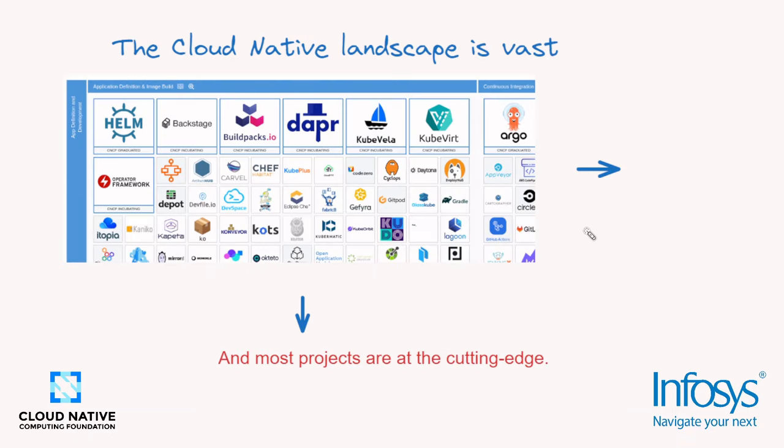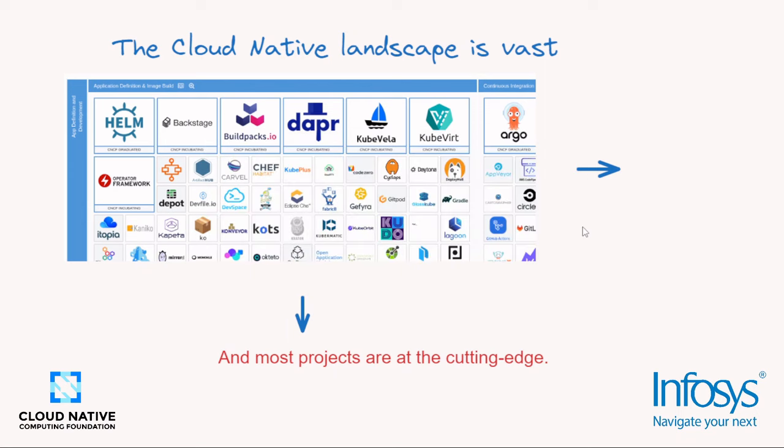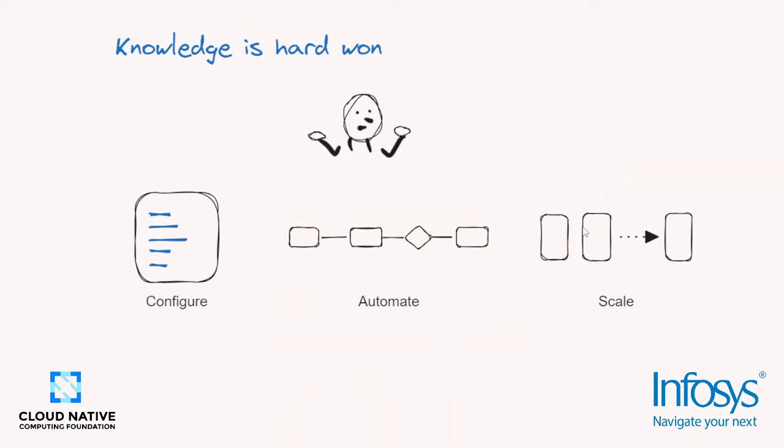All of us who have worked with the cloud-native landscape know that it is vast and many of the projects in the landscape are at the cutting edge of technology. Knowledge in implementing, automating, and productionizing this software — whether it's Kubernetes, OPA, Kaivano, Falco, any project you pick from the landscape — the skills required to productionize these projects in client environments is hard-won.